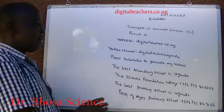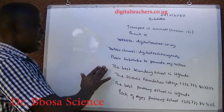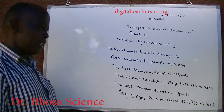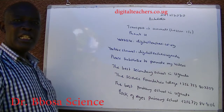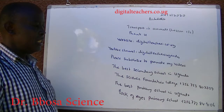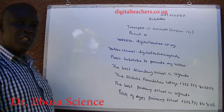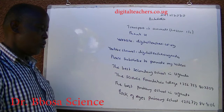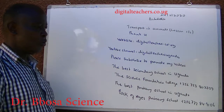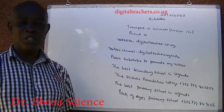Please subscribe to promote my videos. Subscription is free. The best secondary school in Uganda is the Science Foundation College. The best primary school in Uganda is Locke of Ages Primary School. Contact: +256-772-849106.